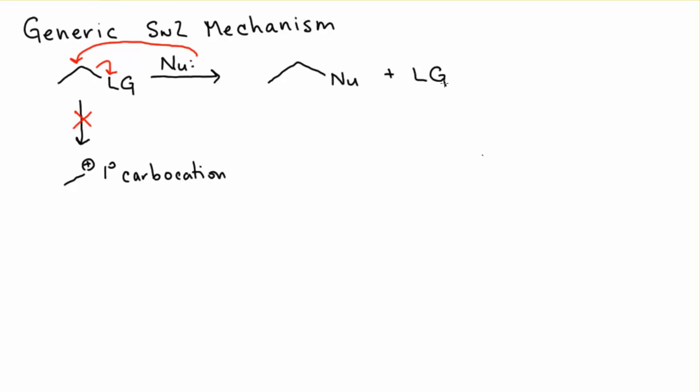So that's the one step mechanism for the SN2, and let's look and see what happens with the energy level diagram. We have our reactants which are both the carbon that has the leaving group, the electrophile, as well as our nucleophile, and then we have our products in which the nucleophile has been substituted in for that leaving group.